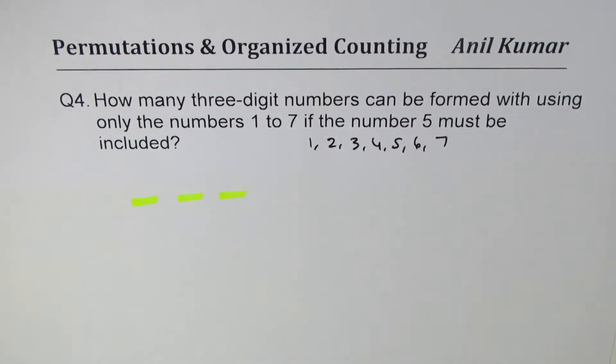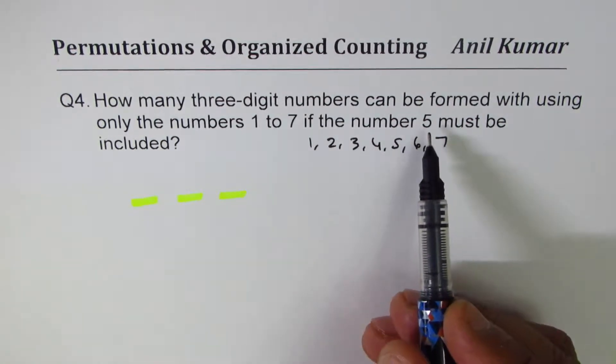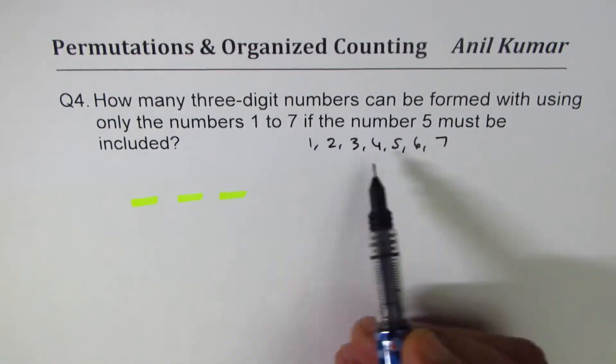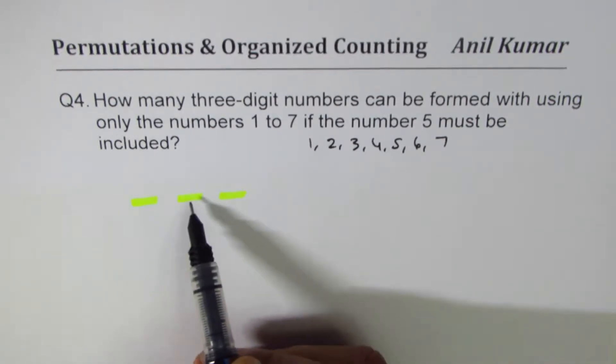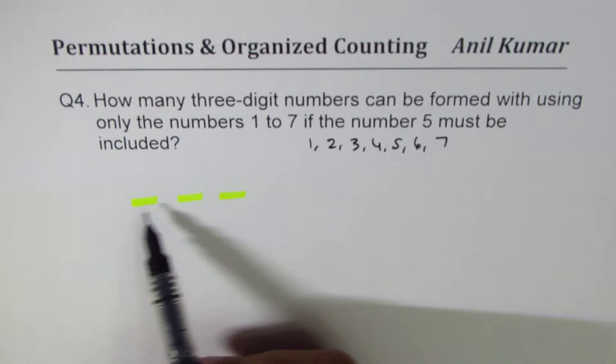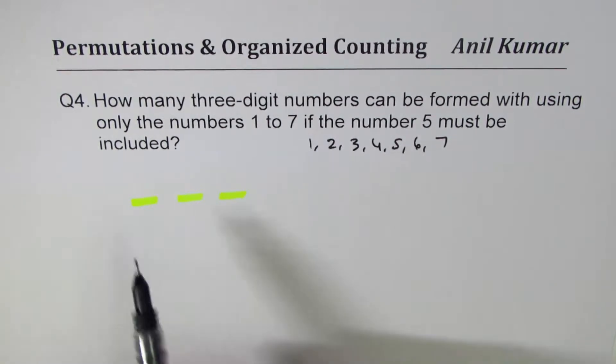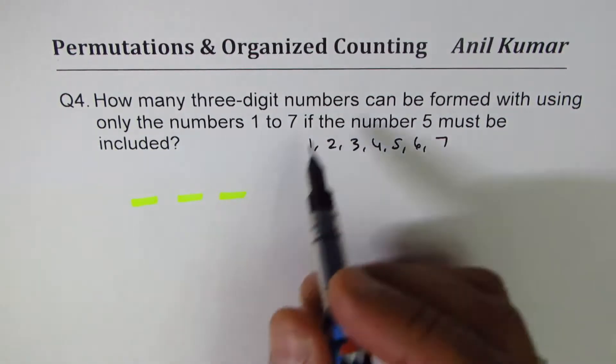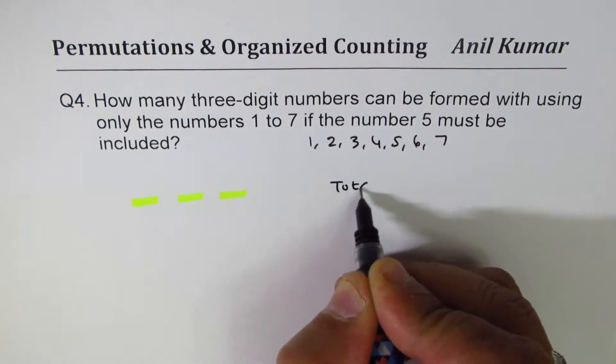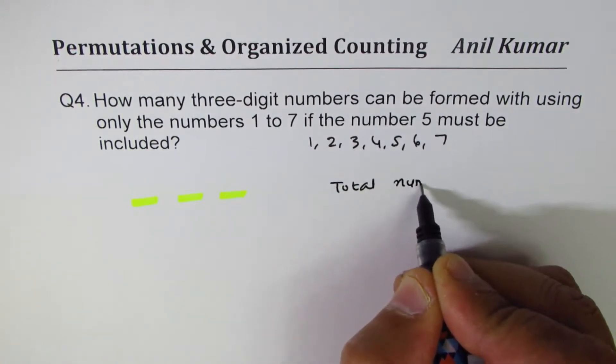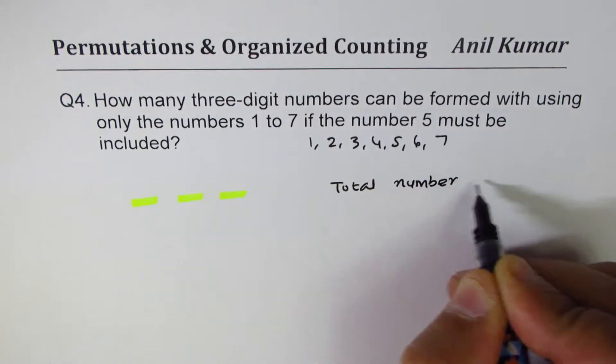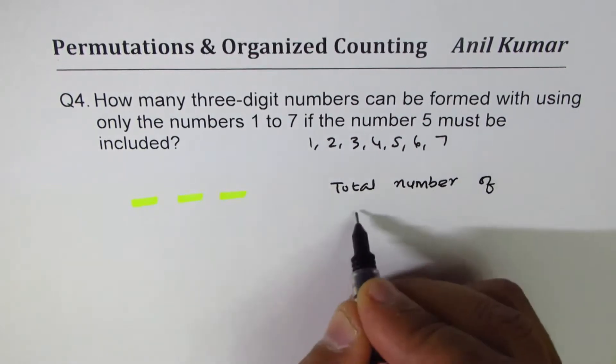One option could be having different cases: including 5 in the first place, second place, third place, two fives, or three fives. But that will make it very complicated. A simpler way could be to find the total numbers, total number of possibilities.